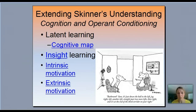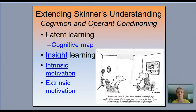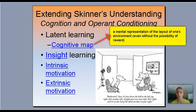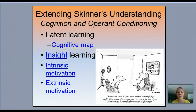Extending Skinner's understanding under cognition and conditioning — latent learning. Latent means what's left behind. When Skinner was doing experiments with rats, he came up with the concept of the cognitive map. He learned that even putting a mouse in a maze without food at the end, the mouse still made a cognitive map of the area — the same way you might be sightseeing around a town, exploring and looking at things. Even without motivation to get through, they're still learning about their surroundings.